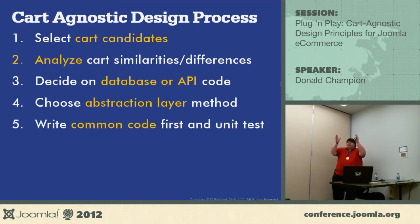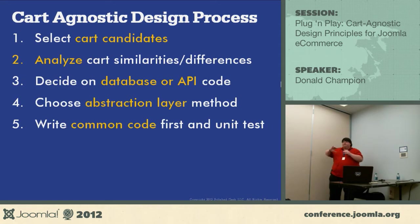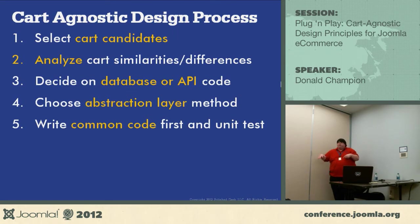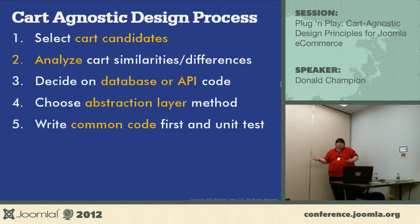Then you have to choose how you're going to abstract it and what you're going to do when you have a different cart. What you want to do is write the common code first. In our instance, we're talking to eBay. We did the pieces that talked to eBay first and got all of that fleshed out, because we didn't know all the pieces eBay needs. They gave us sample code and data but it's not always everything we need to support.